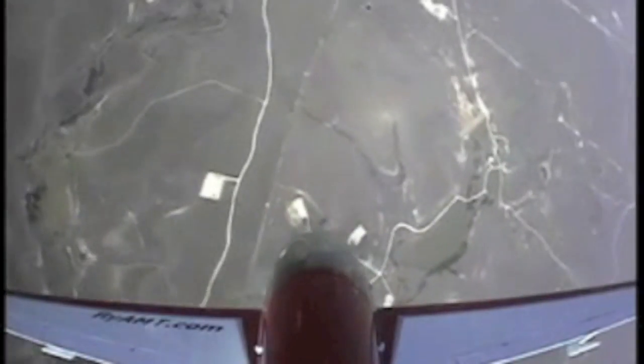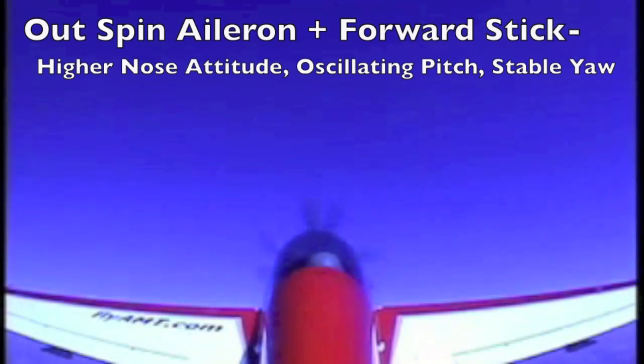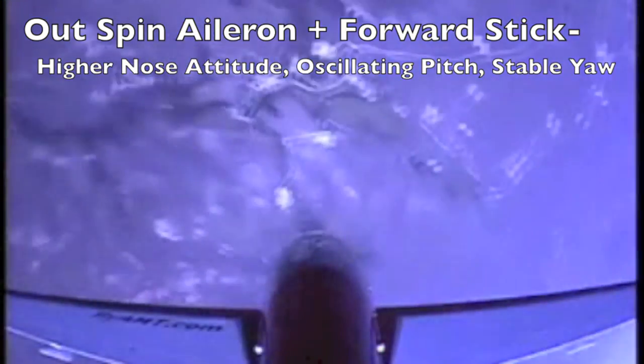The FAA actually doesn't require spin testing for twins. Then we add forward stick to the equation. Again, this is a gyroscopic effect — the nose rises and the yaw rate is noticeably slower. One of the neatest things happening here is the additive nature of multiple gyroscopic inputs. Forward stick brings the nose up very clearly, close to the horizon, and results in a very stable rotation profile.